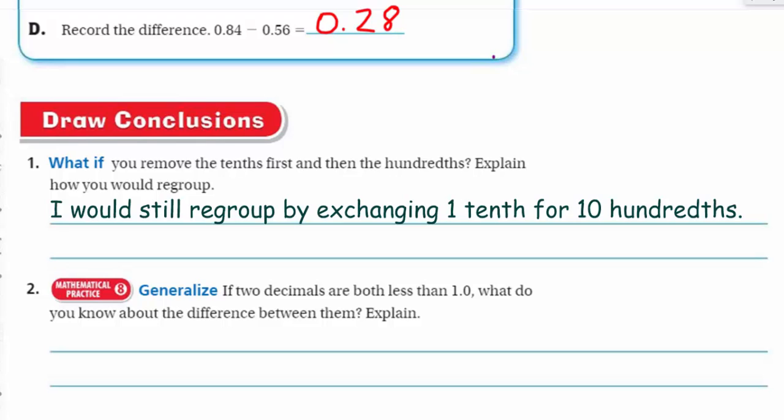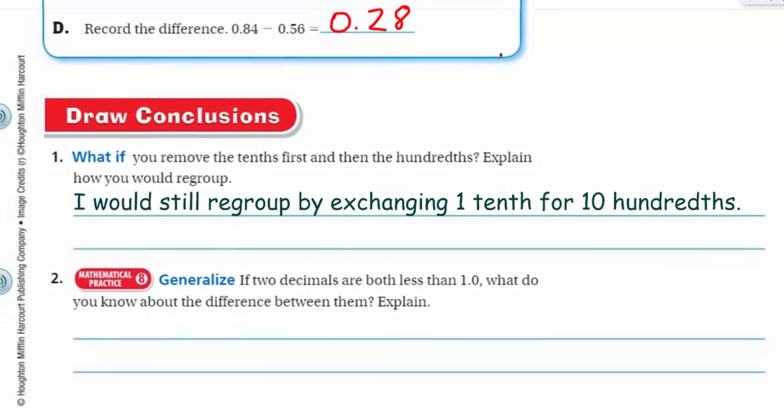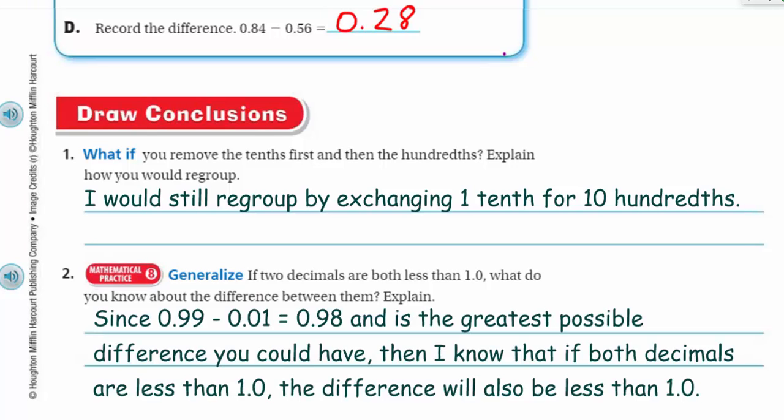Next we have mathematical practice 8. It's where we look for and express that regularity in repeated reasoning. Generalize, if two decimals are both less than one whole, what do you know about the difference between them? Explain. I'm going to say, if we know that two decimals are less than one whole, then both of the decimals must be less than one whole. So the difference will still be less than one whole. For example, if we had 99 hundredths and we subtracted 1 hundredth from that, we'd still end up with 98 hundredths. That's key.